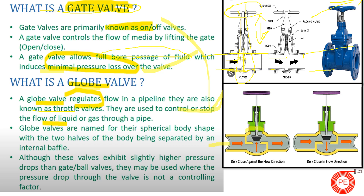In a globe valve, there is a plug which sits inside a cavity. When this plug is in the downward position, the flow gets restricted. When the plug moves upward, the valve opens and flow starts. In between, we can stop the plug for throttling purpose. In globe valves, the flow changes its direction — it goes one way, then changes direction going upward, and then again goes in a horizontal direction.